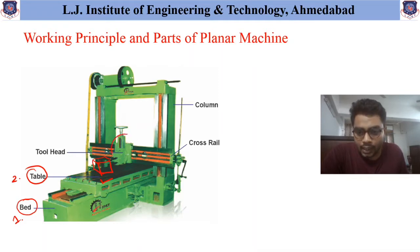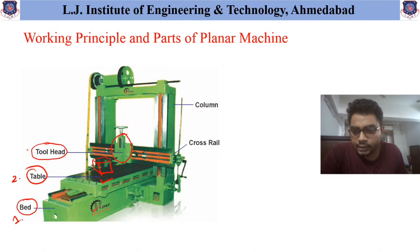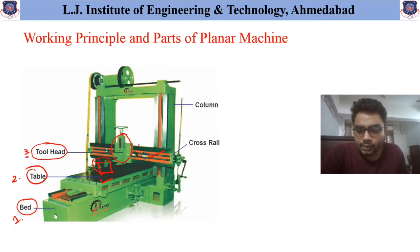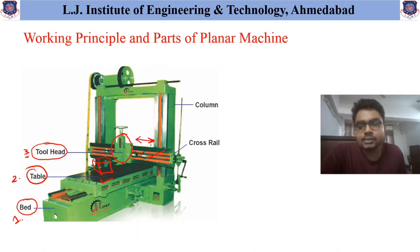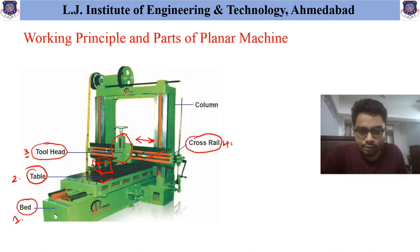The part which helps to hold the tool is called the tool head. The next part which helps to hold the tool head and which maintains the movement of the tool head in the horizontal or axial direction is called the cross rail. That is the fourth part — the cross rail.